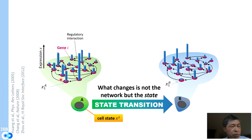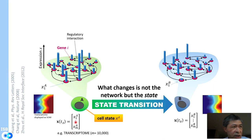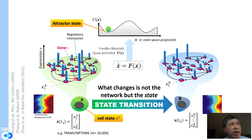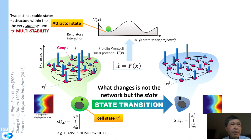What changes is not the network itself — many people think we have a liver network or a stem cell network, but that's not correct. The network is hardwired; what changes is the state, defined by the profile of expression levels of individual genes. We can express this as a high-dimensional vector. With theory — specifically ODEs describing gene interactions — it is justified to view particular states as points in a landscape with stable attractor states, where specific gene activation configurations are stable and observable.